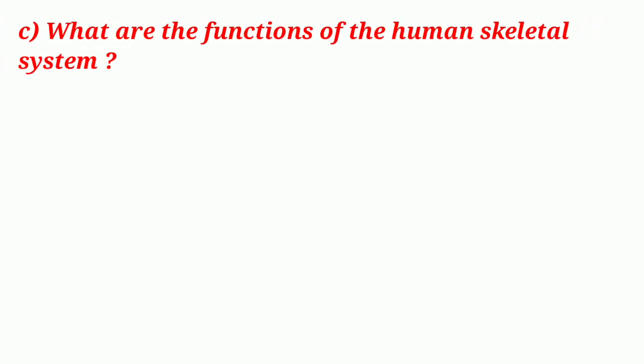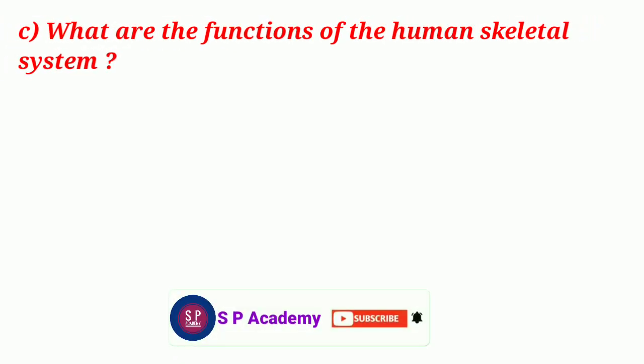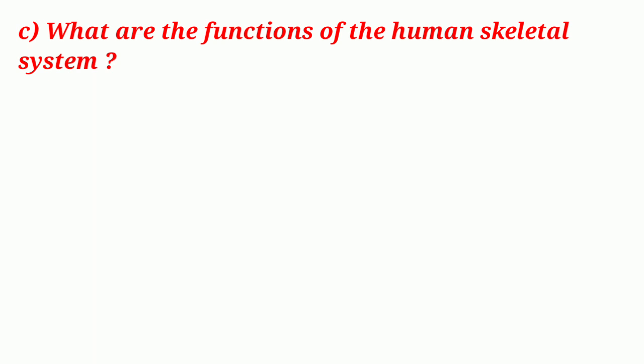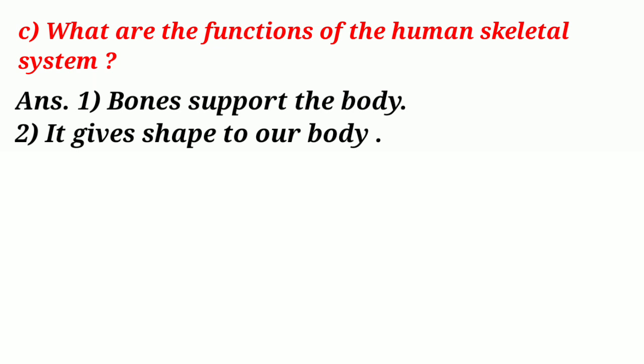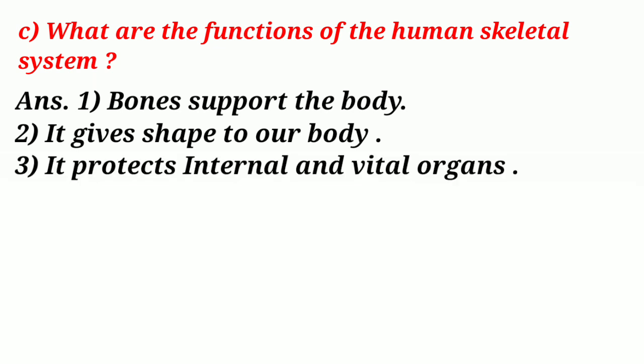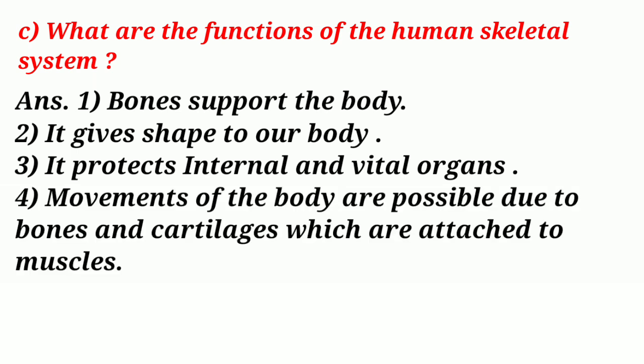For obtaining these nutrients, milk, milk products, fruits, green leafy vegetables, eggs, and meat should be consumed regularly. Question 5c: What are the functions of the human skeletal system? Answer: 1. Bones support the body. 2. It gives shape to our body. 3. It protects internal and vital organs. 4. Movements of the body are possible due to bones and cartilages which are attached to muscles.